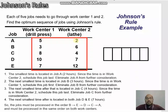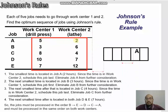The smallest time is located in job A — two hours at work center two. Since the time is in work center two, we schedule this job last. So for job A, the two hours located at work center two means we schedule it last.